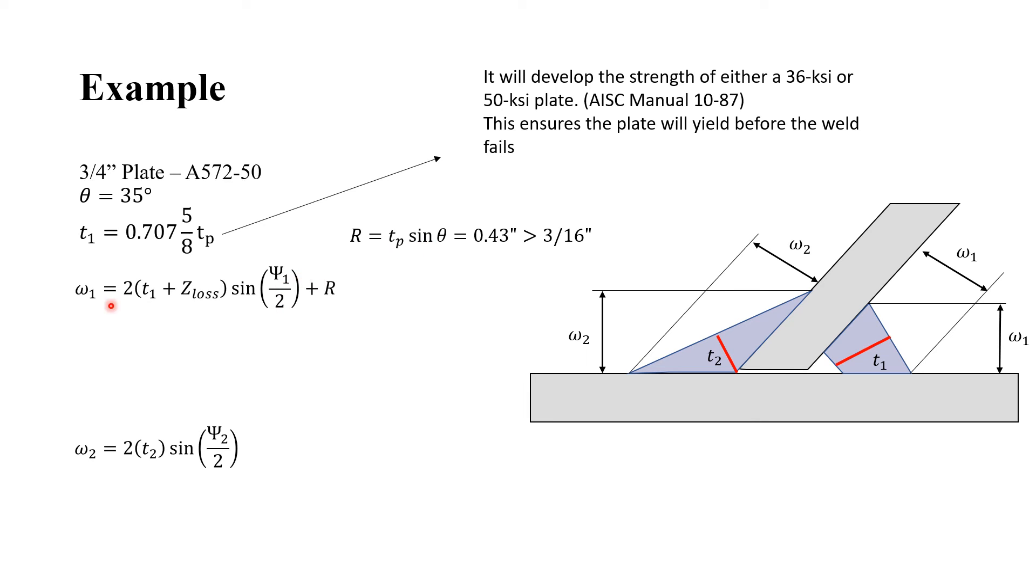And we must calculate the leg size for the right and the left. For the right, we have two times the T1 calculated with 0.70758 of 3/4 inch plus the z-loss in this position, divided by sine of half of this angle. And in this situation, R is 0 because the plate will be beveled.